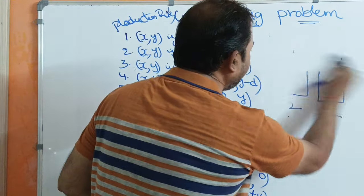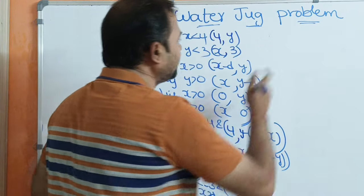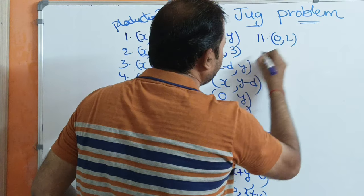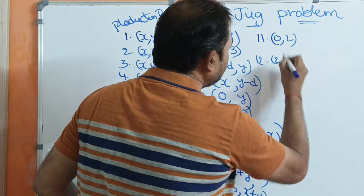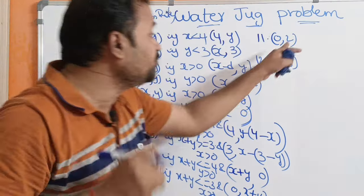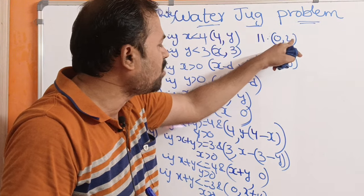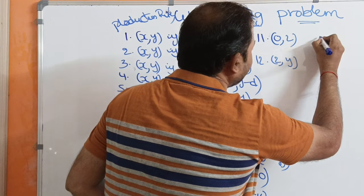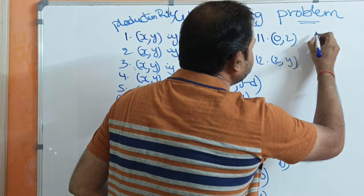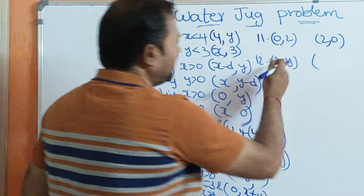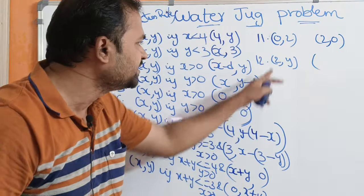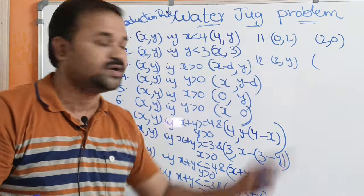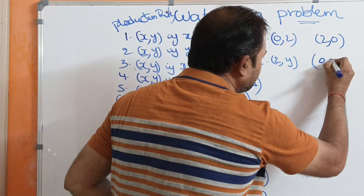The eleventh rule: if the state is (0, 2), we place the 2 liters from the 3-liter jug into the 4-liter jug, giving next state (2, 0). The twelfth rule: if the state is (2, y), we can empty the 2 liters, giving state (0, y).